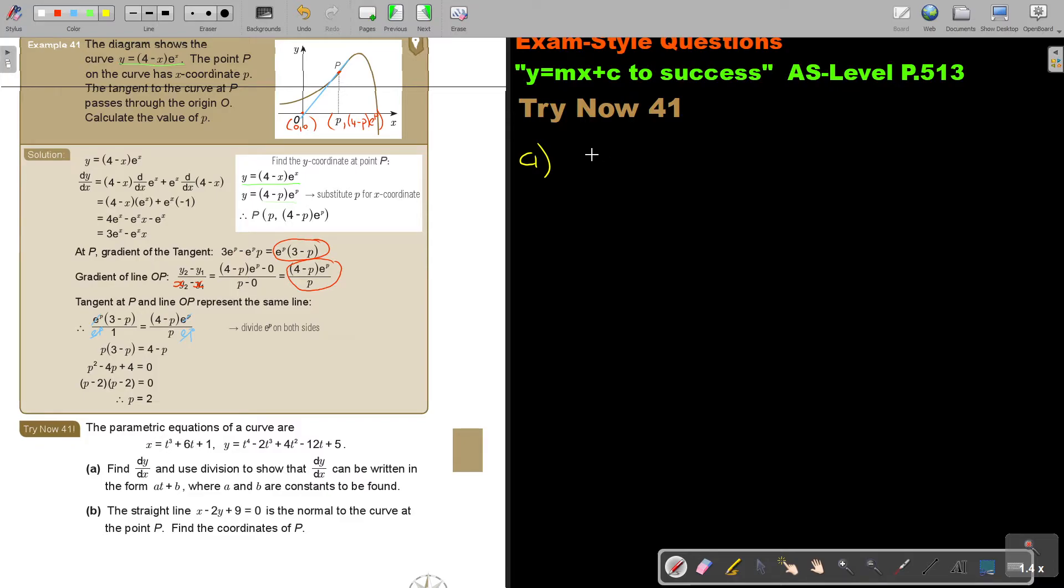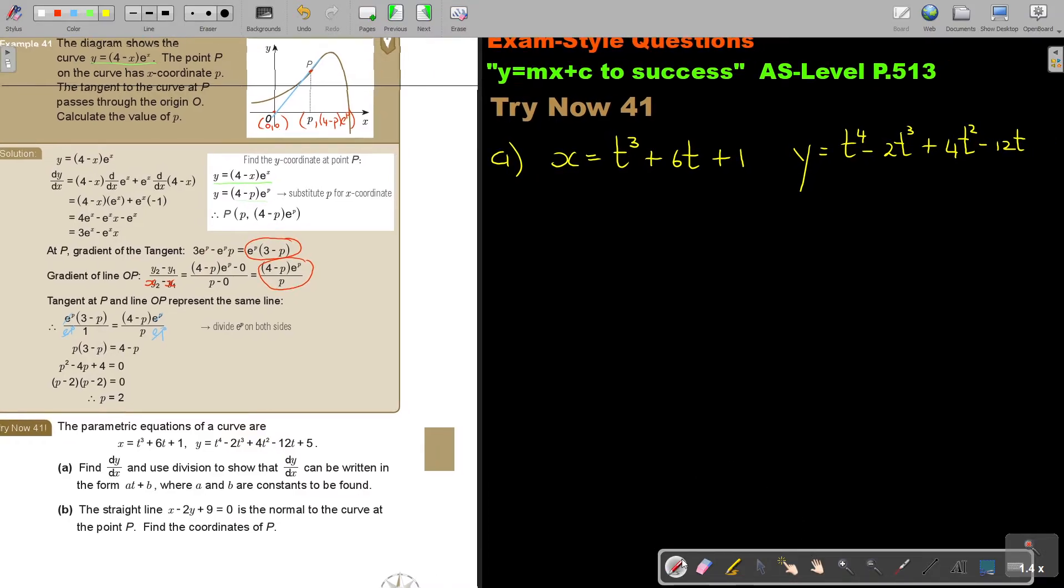The parametric equations, and I have to write it down. x is equal to t to the power of 3 plus 6t plus 1. And y is equal to t to the power of 4 minus 2t to the power of 3 plus 4t squared minus 12t plus 5.